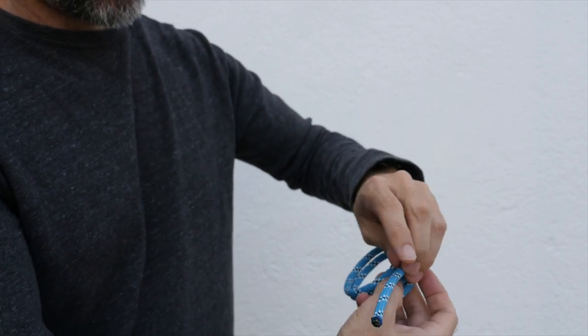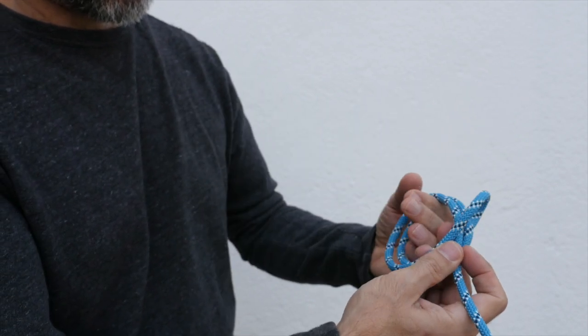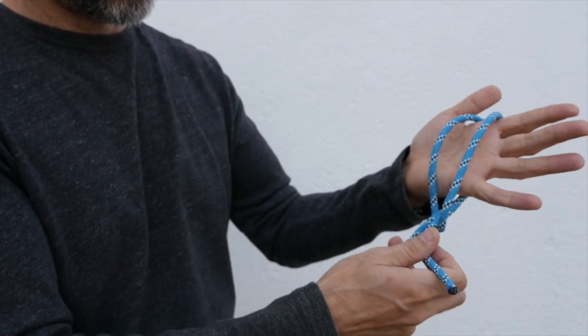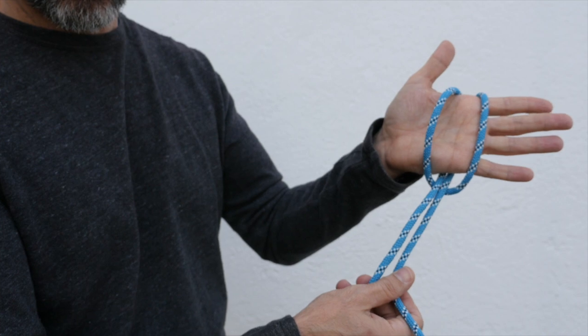Of course, making two loops and bringing them together won't always make a clove hitch. Sometimes it'll make a cow's hitch like this. So you need to make sure that you place your loops appropriately.